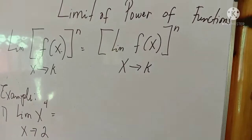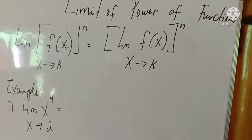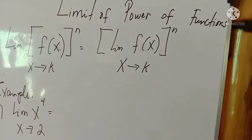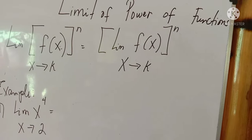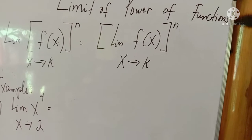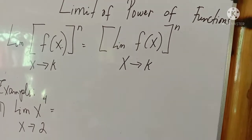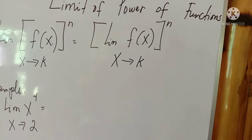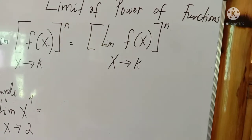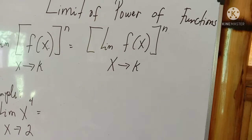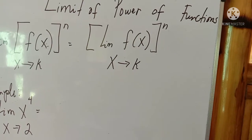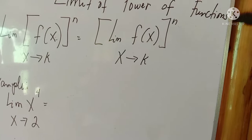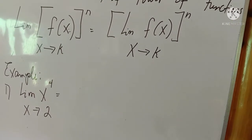Next, we have the limit of a power of a function. The definition is: the limit of f(x) raised to n, where n is the power, as x approaches k. To simplify, it is equal to the limit of f(x) as x approaches k, raised to n. Let us now apply this in our examples.